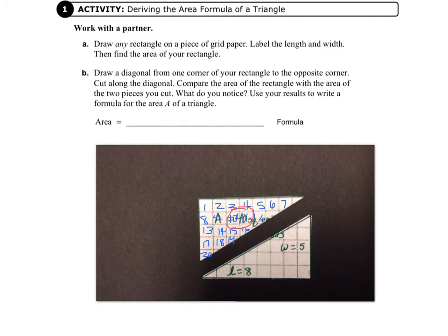And that makes sense to me, because I had a full rectangle of 40 square units, and I cut it in half, so I should end up with 20 square units. So, it says, use the results to write a formula for the area, A, of a triangle.